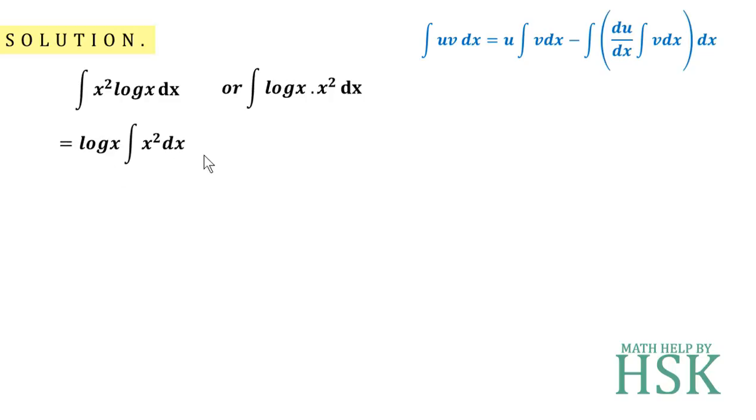Minus differentiation of first function times integration of second function, and further the integration of that product. Now I know that integration of x squared equals x cubed over 3.